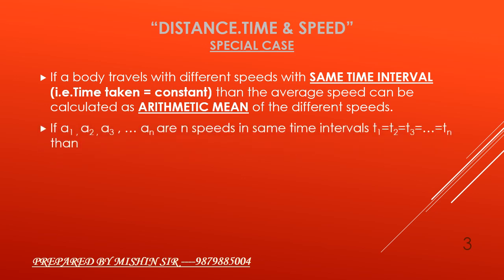If a₁, a₂, a₃ and so on up to aₙ are n different speeds in same time intervals t₁ which is equal to t₂ which is equal to t₃ and so on up to tₙ, then average speed will be (a₁ + a₂ + a₃ + ... + aₙ) / n.